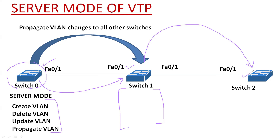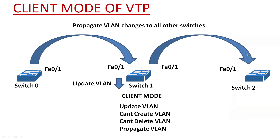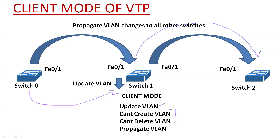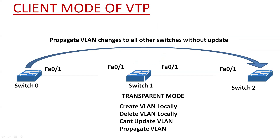If switch 2 is in server mode or client mode, it can update the VLAN database and dynamically create VLAN information. In client mode, when an update is received from server mode or client mode, it will update its VLAN database only — it cannot create or delete VLANs, but it can forward the VLAN information received from other devices.